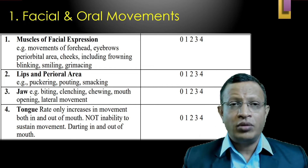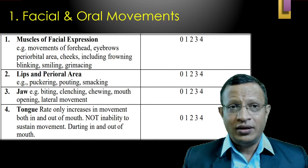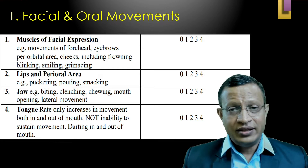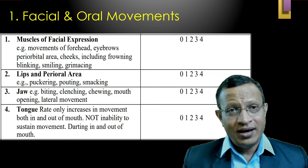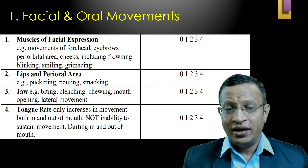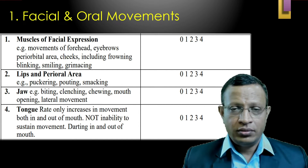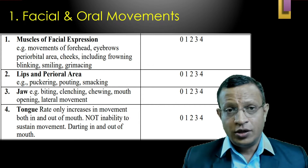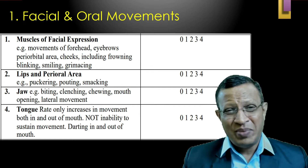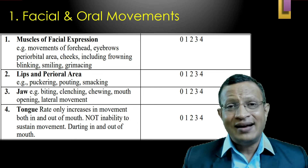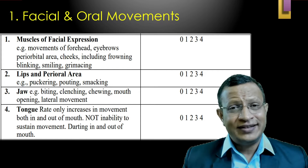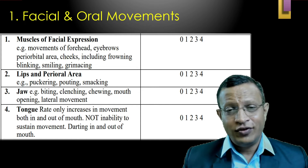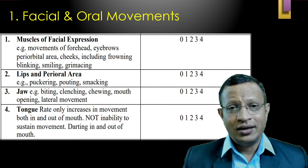On the AIMS form, item 1 covers muscles of facial expression — movements of the forehead, eyebrows, periorbital area, cheeks, frowning, blinking, smiling, and grimacing — rated 0 to 4. Item 2 covers the lips and perioral area — puckering, pouting, and smacking movements. Item 3 is the jaw — any biting, clenching, chewing, mouth opening, and lateral movements. Item 4 is the tongue — observed inside the mouth (floor) and protruded — coded accordingly.